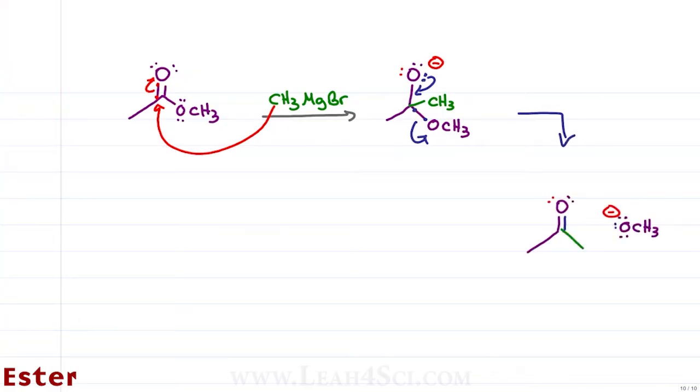Our resulting molecule has the initial carbon chain with a double bond to oxygen and the incoming Grignard R group. Off in solution we have an OR minus, this time OCH3. But remember, if we're in a Grignard solution, we have more molecules of Grignard floating around. And what happens when you have a Grignard in the presence of a ketone? That Grignard will attack.